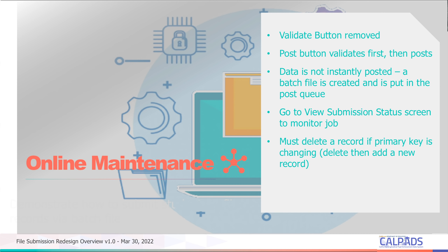For online maintenance, the highlights are: the validate button has been removed; the post button validates first and then posts — it's not instantly posted and you need to check the file submission view for its status. Also, you can no longer edit primary keys in online maintenance — you have to either do it through batch or delete that record and manually re-add it. This pushes you toward fixing data in your SIS and sending up a batch record.